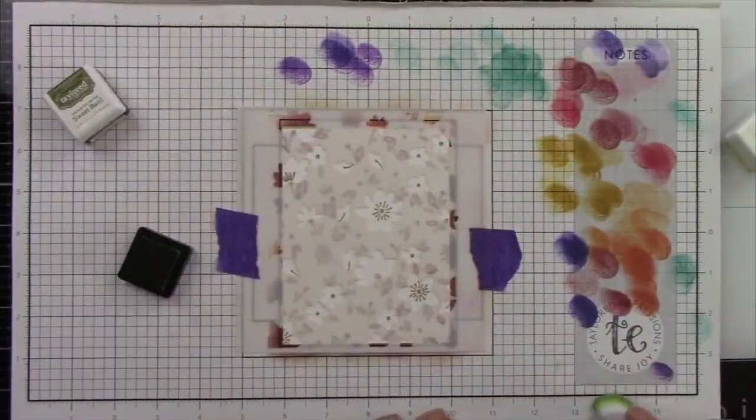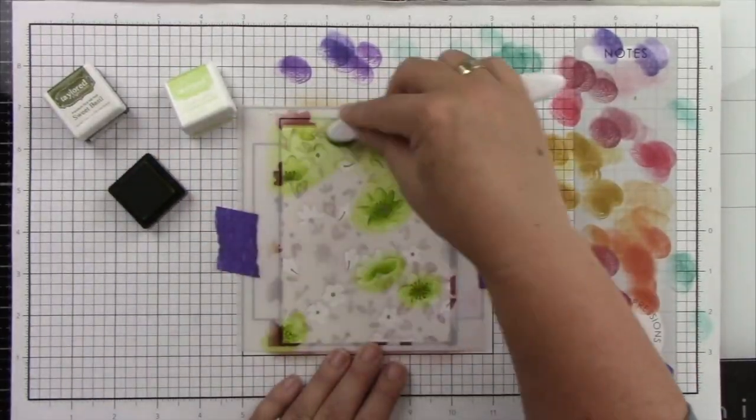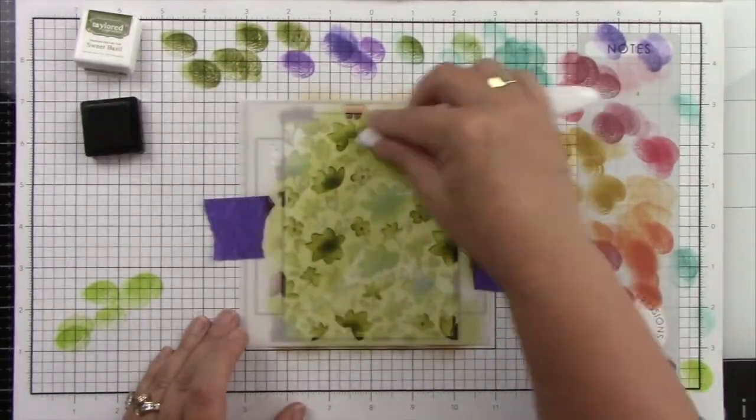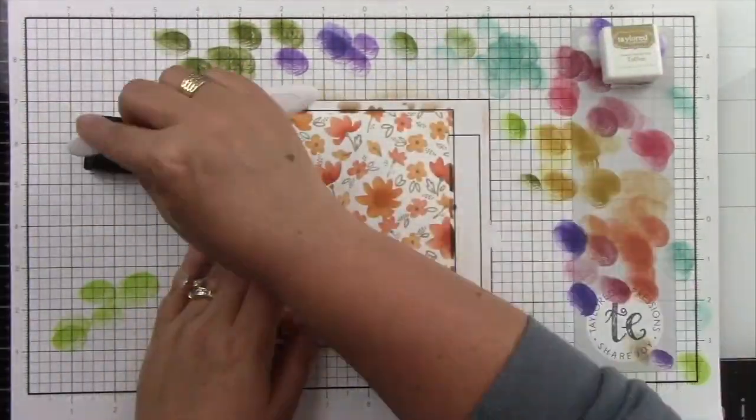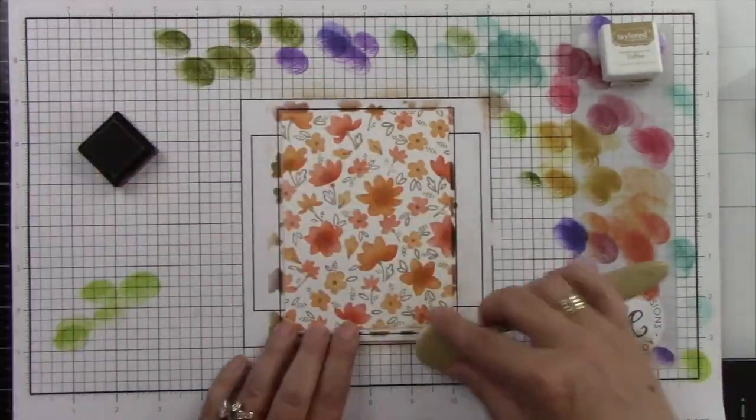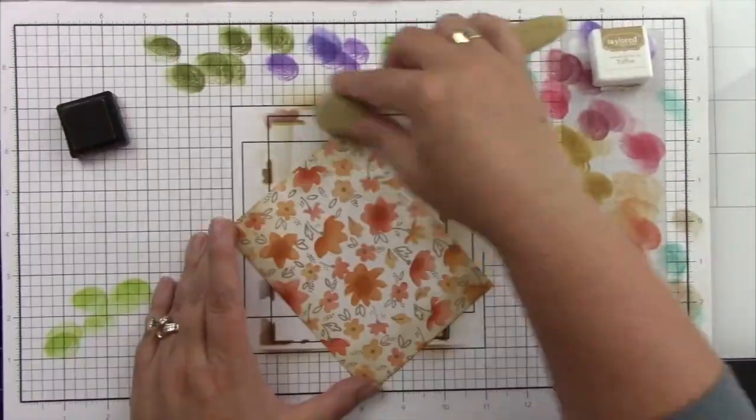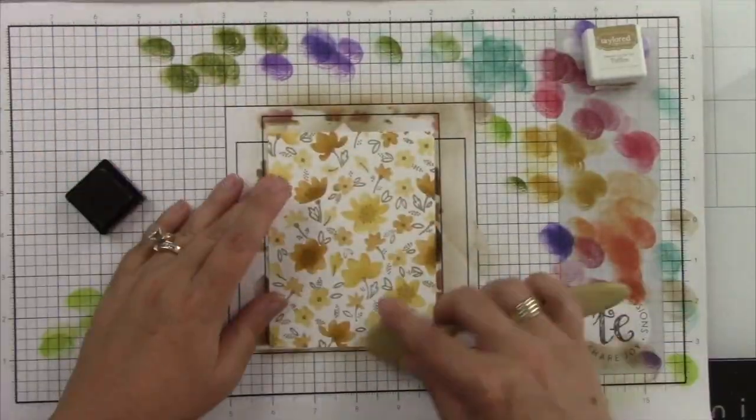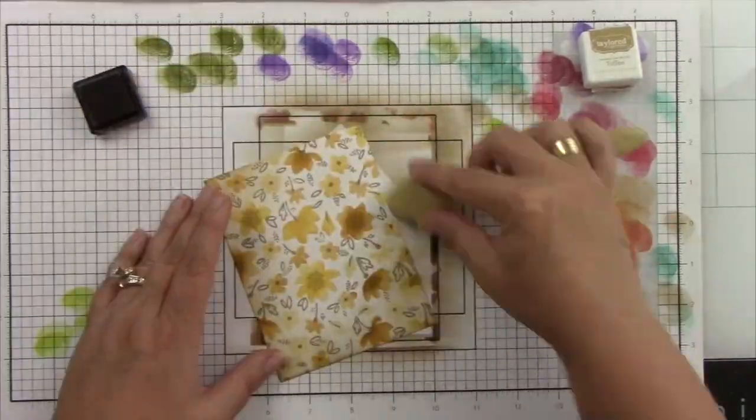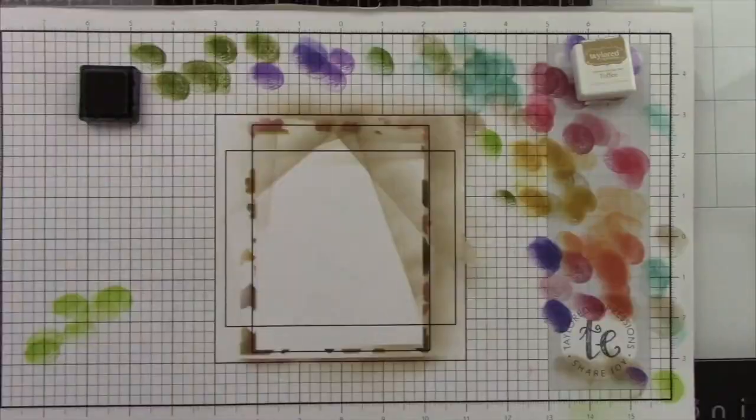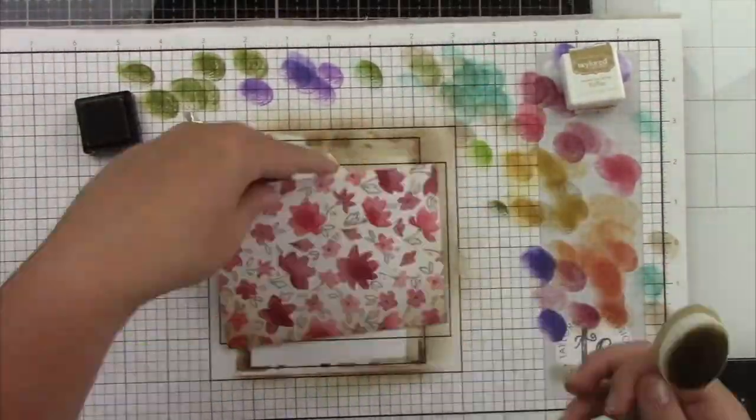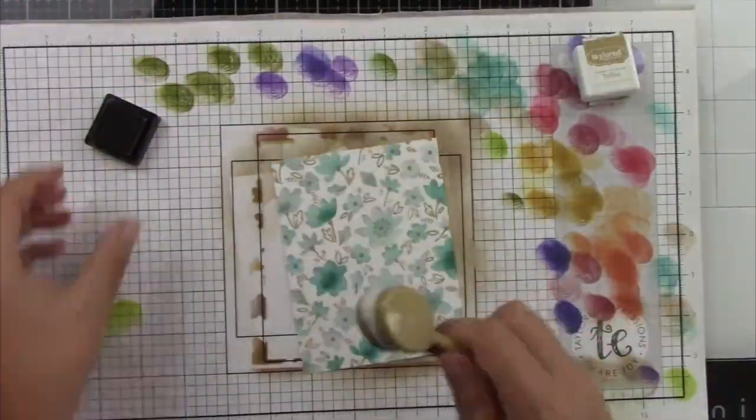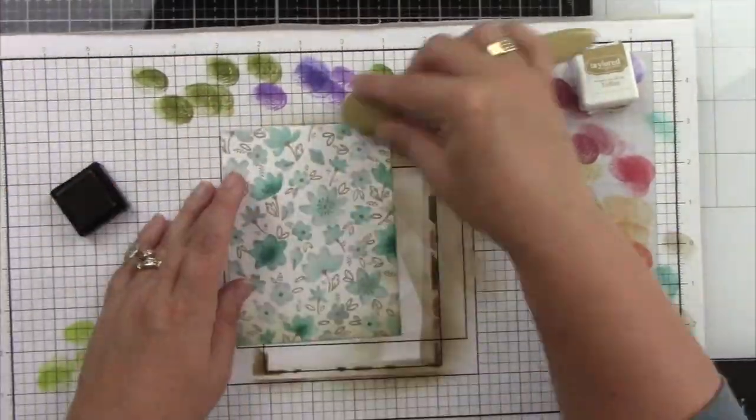And then I am going to be using the sweet basil and granny smith. So the granny smith is first because it's lighter and then the sweet basil, which is a bit darker. Now I've decided to add some aging to this to give it a little bit of a vintage look. And it almost reminds me of beautiful wallpaper. I am coming in with toffee ink and a large regular size blender brush and blending around the edges of all of these A2 size panels that we just did the stamping and stenciling on. And you can see how pretty this looks.